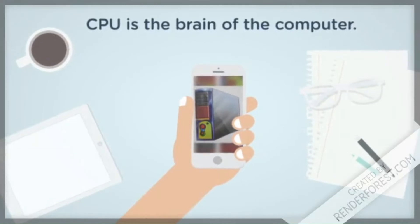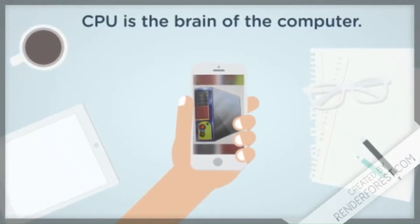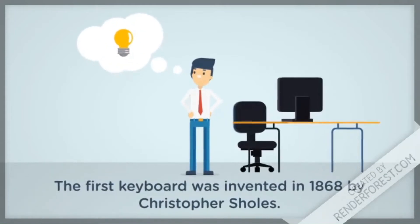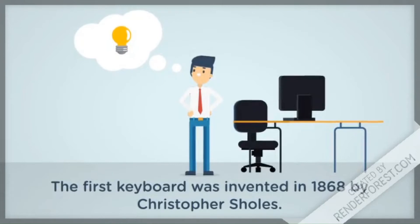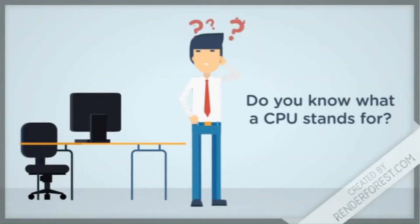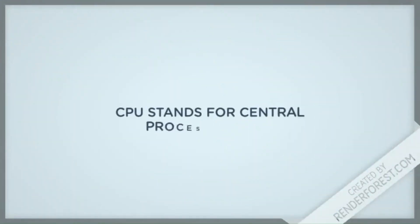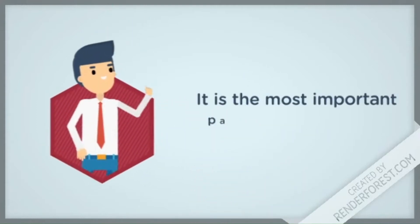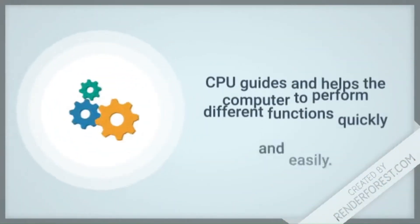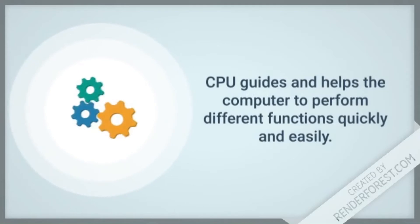CPU is the brain of the computer. The first keyboard was invented in 1868 by Christopher Scholes. CPU stands for Central Processing Unit. It is the most important part of the computer. CPU guides and helps the computer to perform different functions quickly and easily.